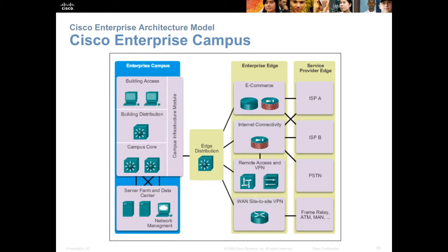If we look at the enterprise campus highlighted here in blue, these slides are looking at the whole diagram from the previous slide in more detail. On the campus notice that we have access, distribution, and core. We also may have a data center on site, shown here. Then we add an edge distribution module which is going to connect us out to the remote sites.